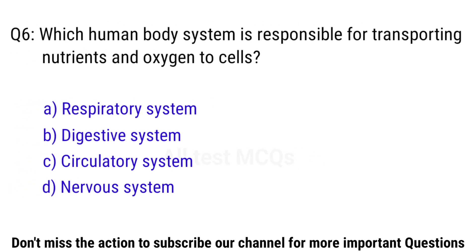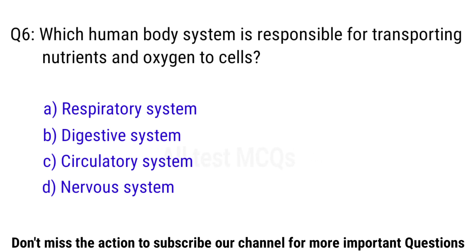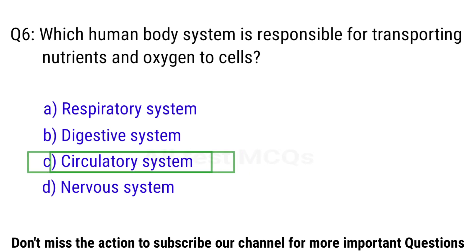Q6. Which human body system is responsible for transporting nutrients and oxygen to cells? The right answer is option C. Circulatory system.